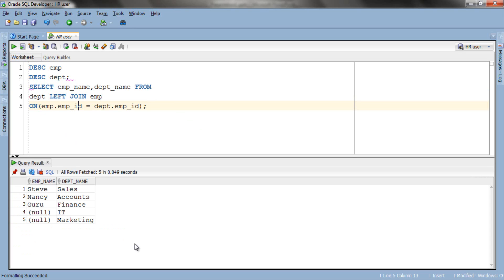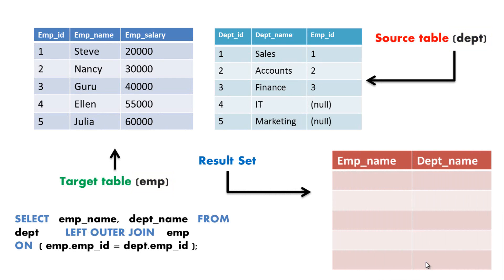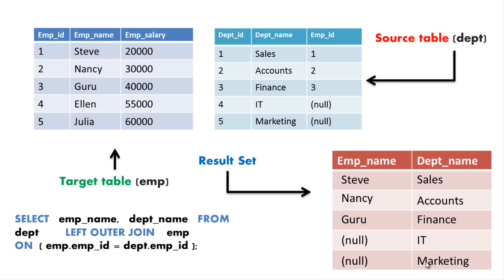Here is our result. Let's have an in-depth look for better understanding. The DEPT table is our source table and EMP is our target table. As you can see, all column records from the source table are returned in the result regardless of the join condition. For the target table, only those records that fulfill the join condition are returned. For example, EMP ID 1 of the target table matches EMP ID 1 of the source table to return the EMP name Steve; similarly EMP ID 2 returns Nancy, and so on. Since the last record does not fulfill the join condition, NULL is returned. This means we will have all records of DEPT name column in our result set, but only those records from EMP name column which satisfy the join condition.